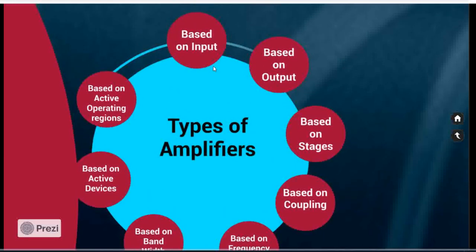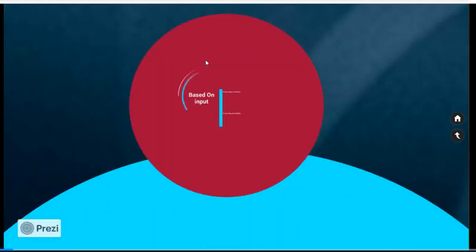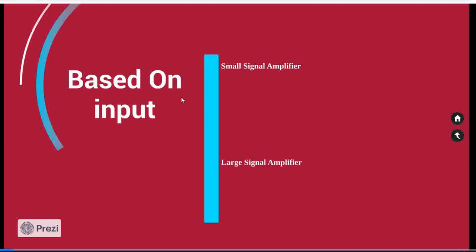Initially, we move towards classification based on input. Based on the input, the amplifiers are mainly classified into two categories: one is small signal amplifier and the second one is large signal amplifier. In the small signal amplifier, the corresponding input signal is near and around the active range, and the input signal in small signal amplifiers is only a few millivolts.